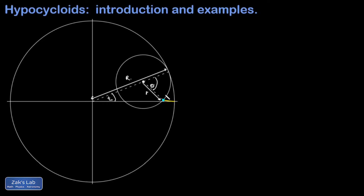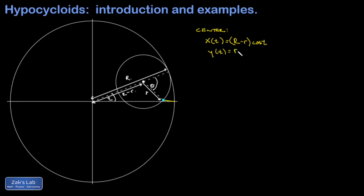Our general strategy is to locate the center of the smaller circle and then find the displacement relative to that center to reach the point actually tracing the curve. The distance to the center of the smaller circle is big R minus little r. So the x-coordinate of the center of the small circle is (R − r)cos(t), and the y-coordinate is (R − r)sin(t).